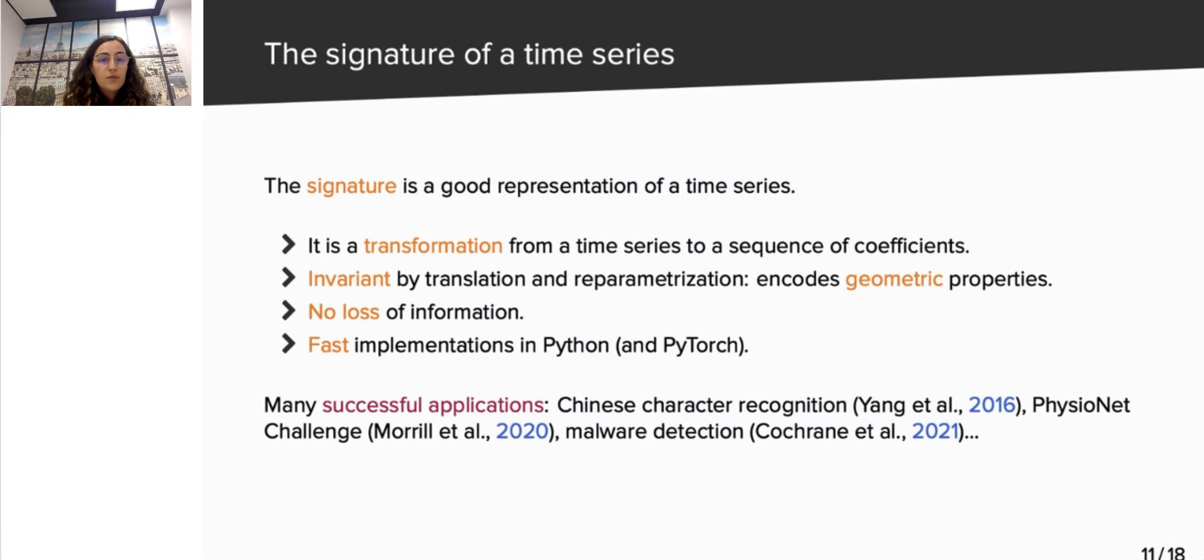Let us now give a few details on the signature transform that we mentioned earlier. The signature is a tool coming from stochastic analysis, which is more and more used in machine learning to create feature sets for time series. Indeed, it maps a multivariate time series of any length to a sequence of coefficients, without losing too much information. It is worth mentioning that it is a transformation invariant by translation and reparametrization, which is often a desirable property. Combined with deep learning algorithms, it has achieved state-of-the-art performance on several applications, such as Chinese character recognition or early detection of sepsis in the PhysioNet challenge.